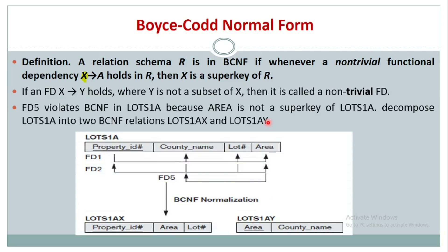Let me explain this concept with a simple example. Here we have a simple schema where we have three functional dependencies — FD1, FD2, and FD5. We have two candidate keys: property ID, and the other is county name and lot number.